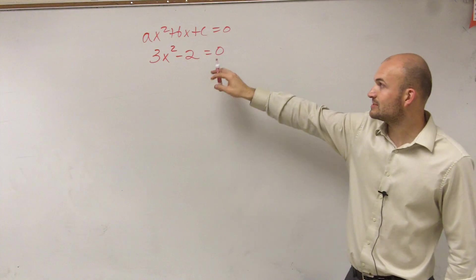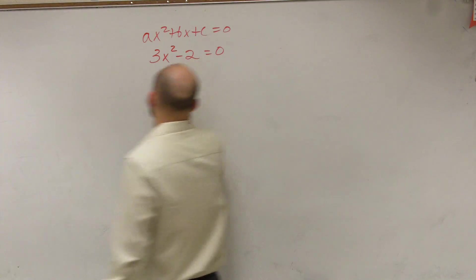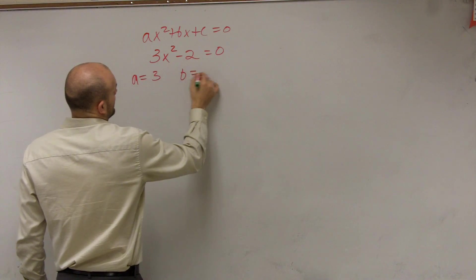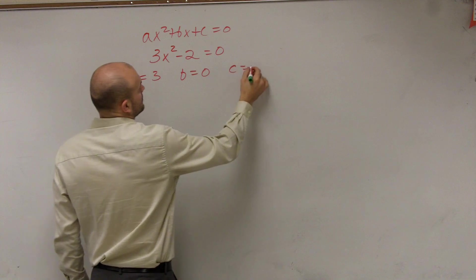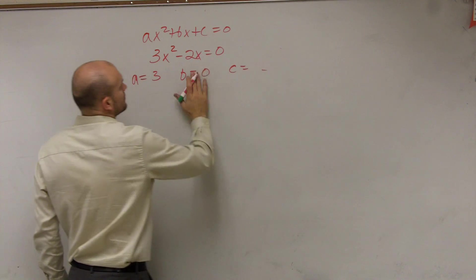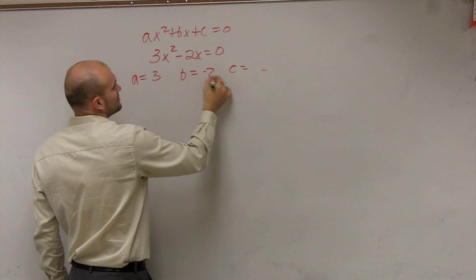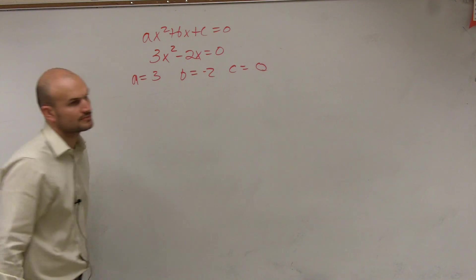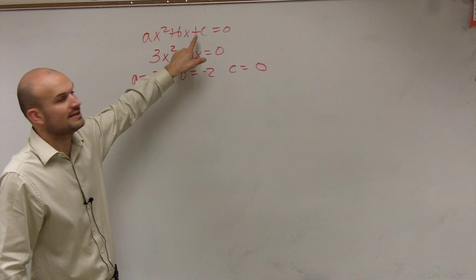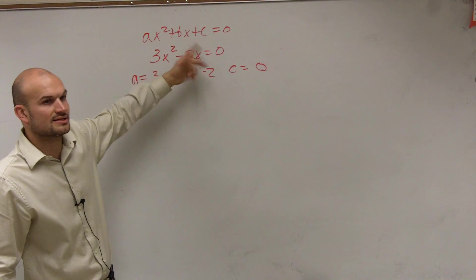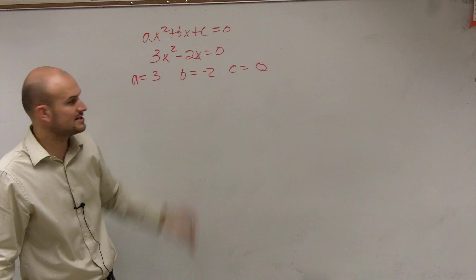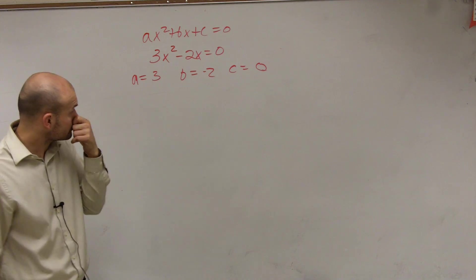So now we look at this and say: a is the coefficient of your quadratic term — is that going to be 3? Yes. So therefore, b equals negative 2 and c equals 0, because I do not have a constant term. I don't have anything plus or minus my 2x, so c is going to be 0.